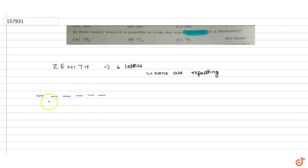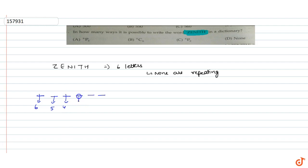We have six positions to fill. The first position has 6 possibilities, the second has 5, then 4, then 3, then 2, then 1. So the number of words is 6 × 5 × 4 × 3 × 2 × 1, which is 6 factorial.